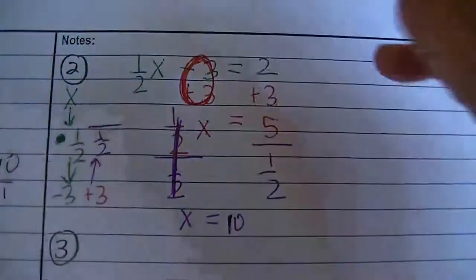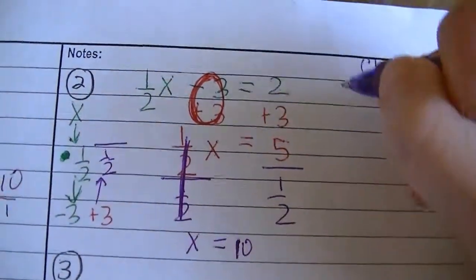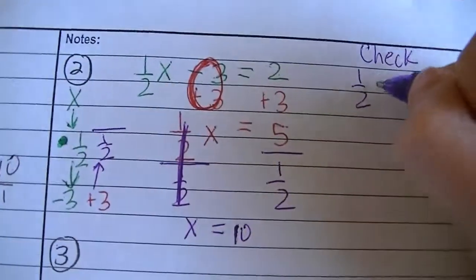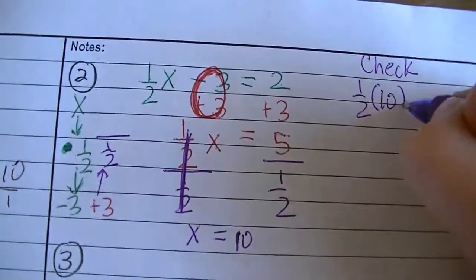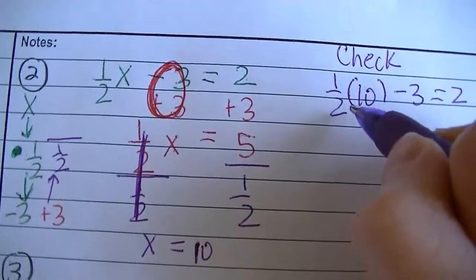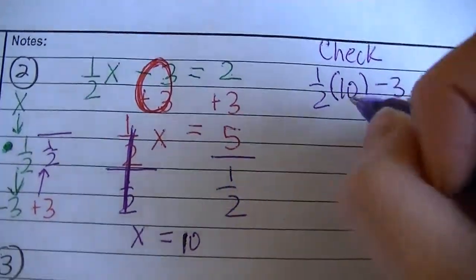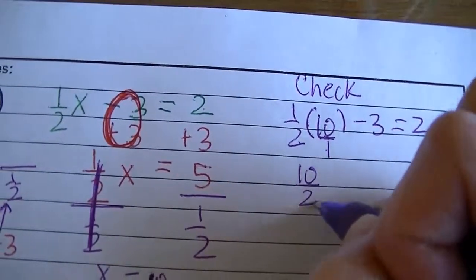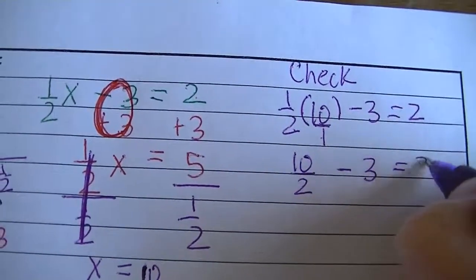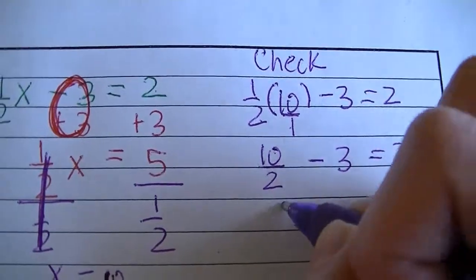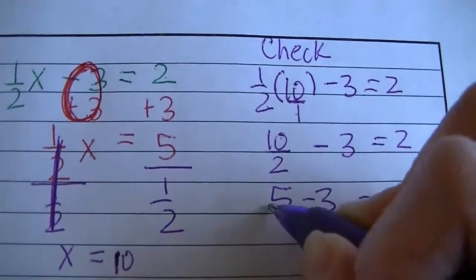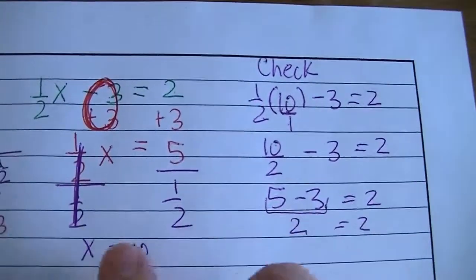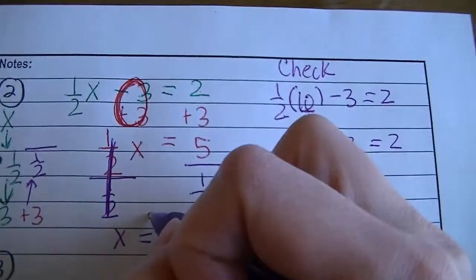Before I circle it, I want to make sure I check it. Rewrite that original problem written in green, and instead of putting x, substitute that value of 10 right there — remember, that means multiply. Half of 10: you can multiply it as 1 times 10 is 10, 2 times 1 is 2, so 10 over 2. Then subtract 3 and that should equal 2. Well, 10 divided by 2 is 5, then subtract 3 — 5 subtract 3 does equal 2. And this side equals 2. Since both sides of that equal sign are true after substituting that value in, we know that 10 is the correct answer.